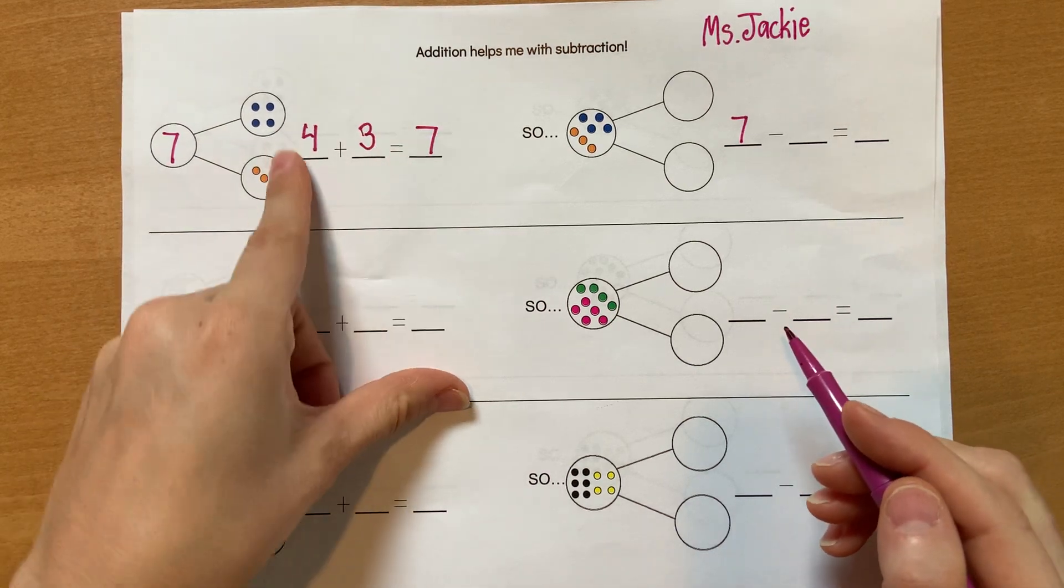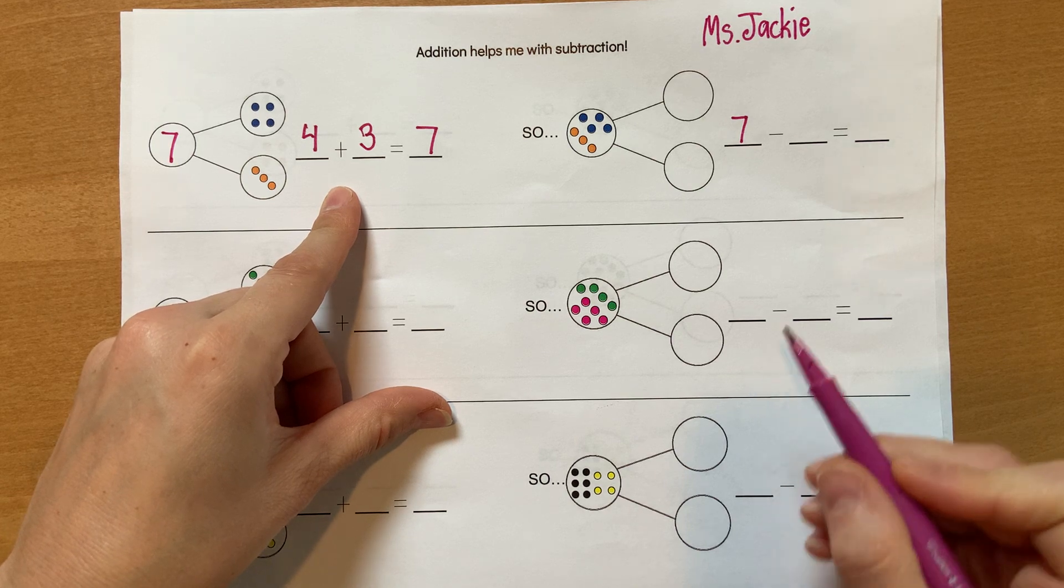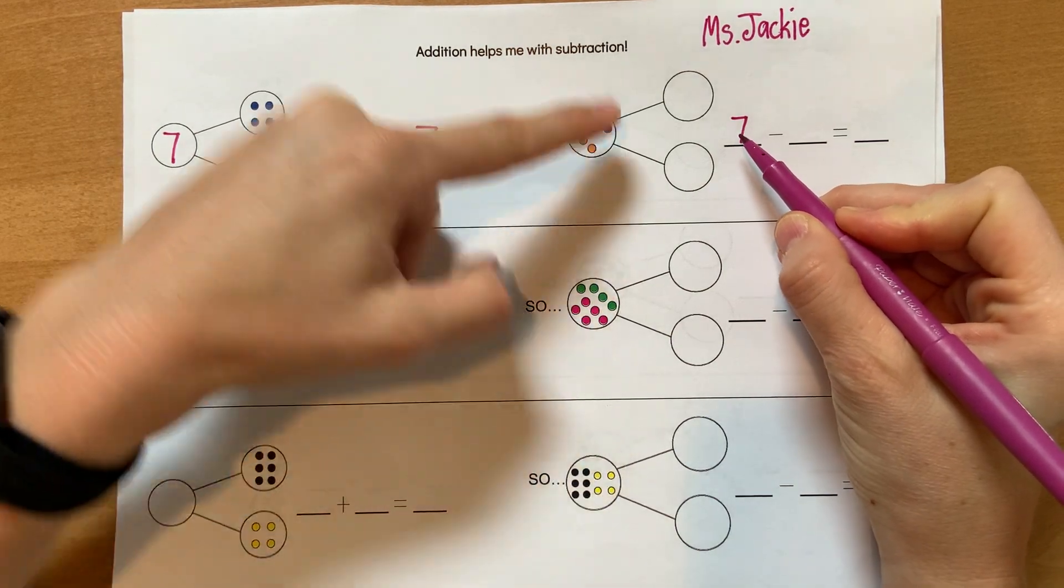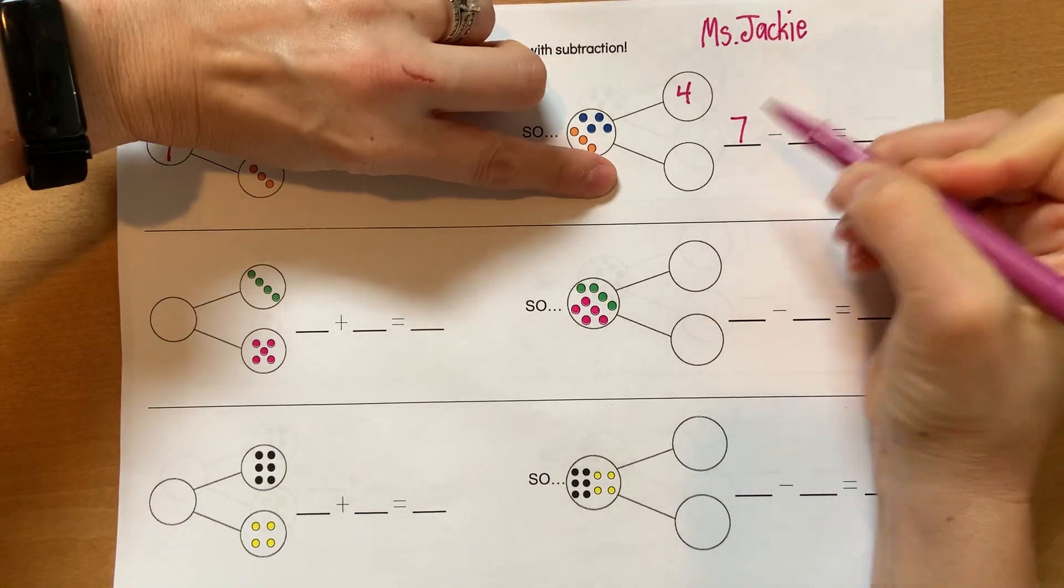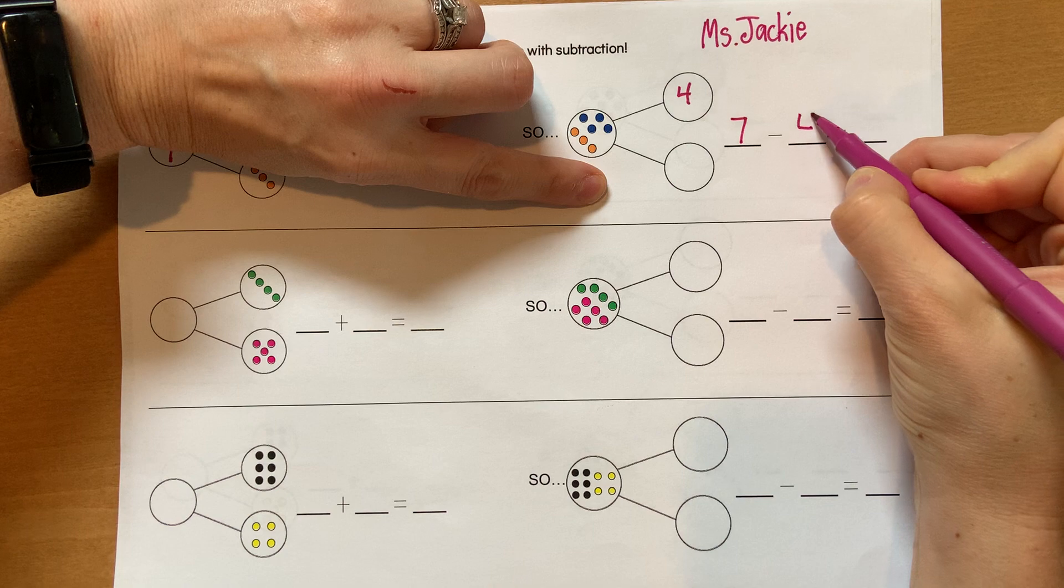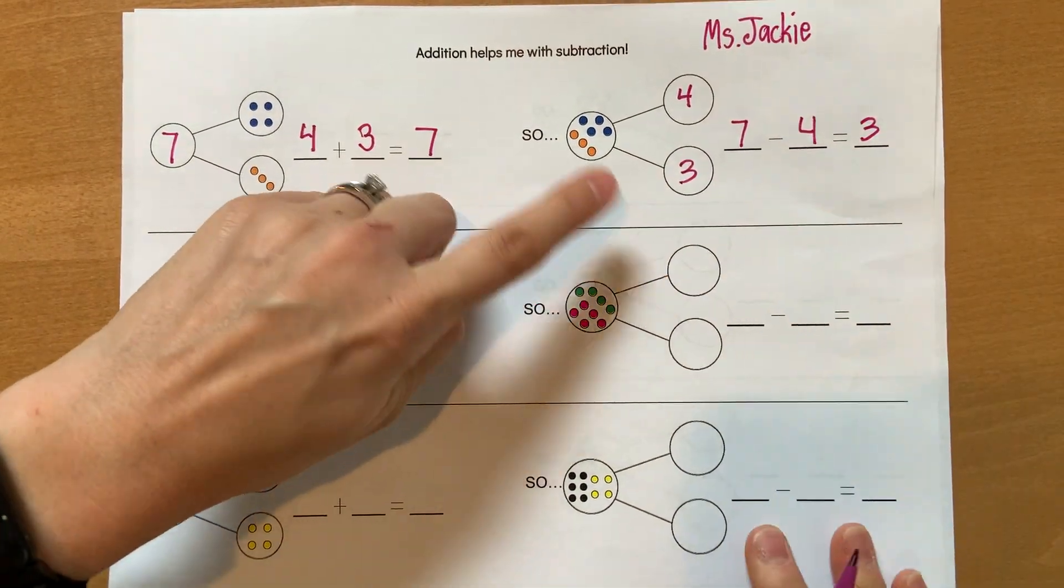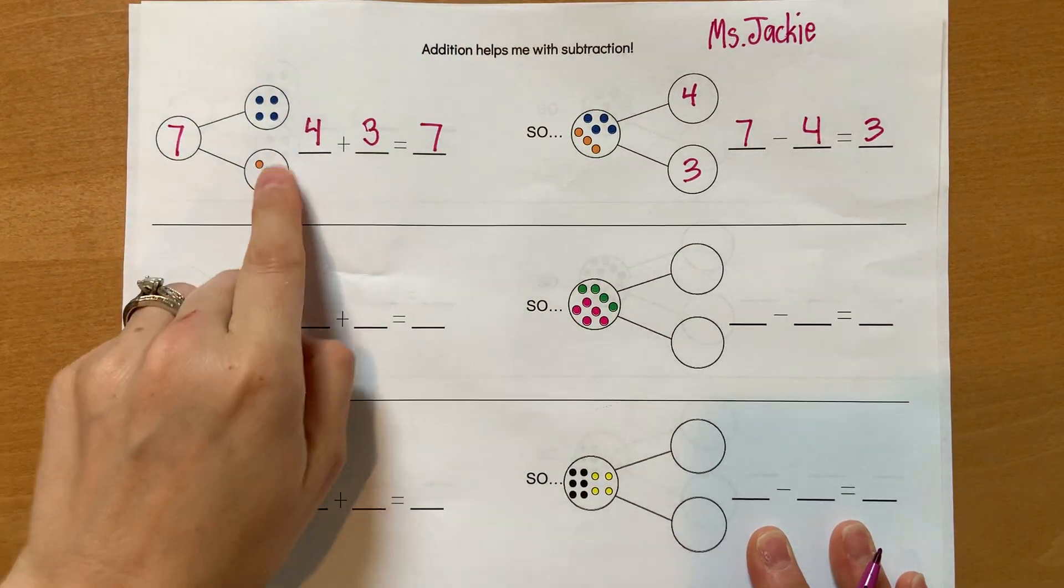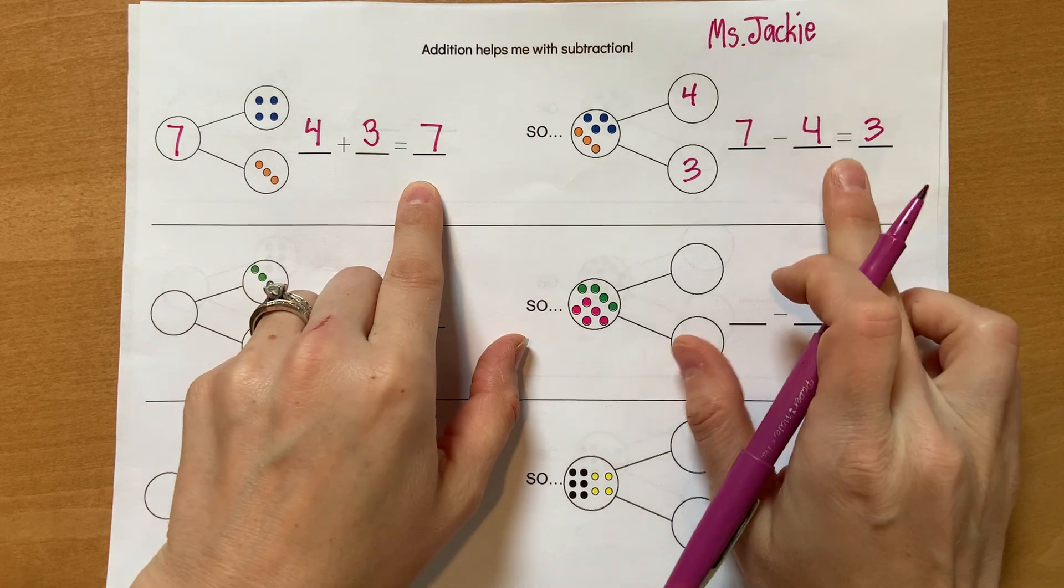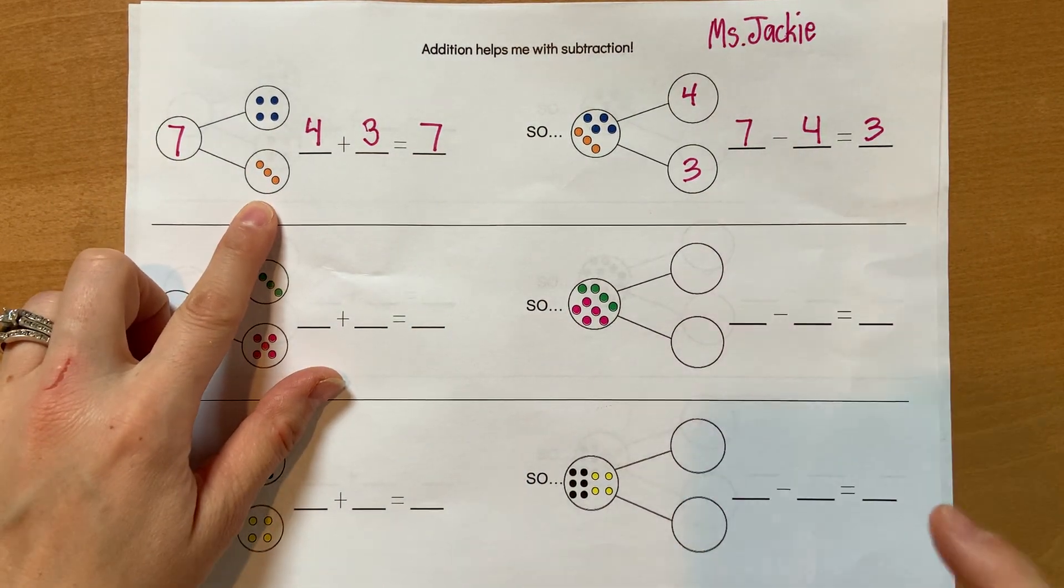So this is called a number family, a fact family. So if I do seven minus four, if I were to put four up here, then I have three left. So if I take away four, I'll have three left. Or seven minus three equals four. This fact family makes this really easy. Addition helps me with subtraction.